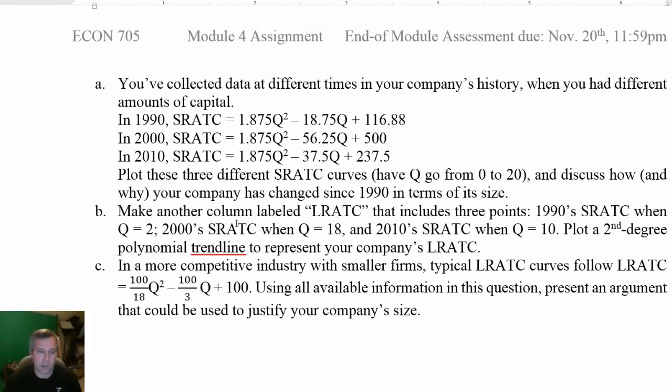And when I get down into part C, I do all this other stuff in part A when I'm making my short run cost curves and my long run average total cost curve. And then in part C, it says in a more competitive industry with smaller firms, you get long run average total cost curves that look like this formula does. So then I say present an argument that could be used to justify your company's size.